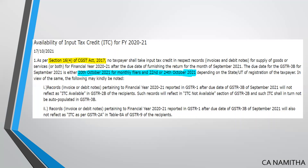Two very important points are issued in this advisory which require your attention. The first point is: records — that is either invoices or debit notes — pertaining to financial year 2021, if reported in GSTR 1 after the due date for GSTR 3B for September 2021, will not reflect as ITC available in GSTR 2B for the recipient. Such records will not be auto-populated in GSTR 3B.